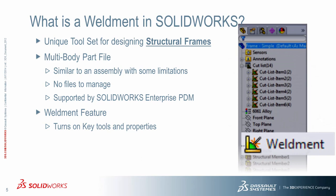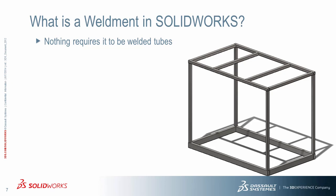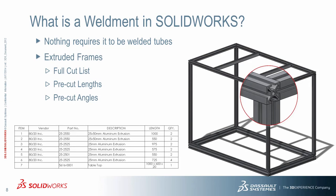Weldment parts also have a unique feature in their Feature Manager tree called the Weldment feature. This turns on some key tools and unique properties that really make weldments suitable for this type of design task. The last thing they contain is a cut list, which is really important when it comes to creating documentation. Importantly, nothing requires it to be welded tubes. Though the tools were originally conceived for this type of design, there's no reason we can't use them for aluminum extruded frames — and there are a lot of advantages, including getting a full cut list of all parts.